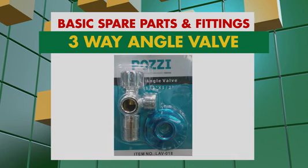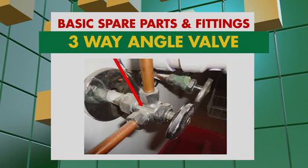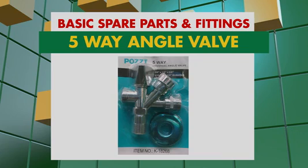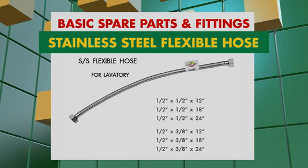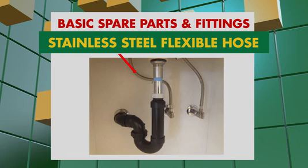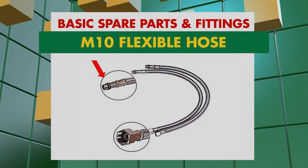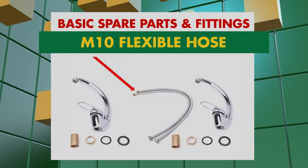Ang 3-way angle valve ay ideal na ginagamit sa mga mixing faucets na walang abang for hot water line. Ang 5-way angle valve naman ay ideal gamitin sa toilet at hand spray bidet ng banyo, dahil ito ay may dalawang control valve para sa pag-on and off ng water supply. Ang stainless steel flexible hose ay ginagamit for water supply papunta sa faucets ng laboratory or kitchen faucets. At ang M10 flexible hose ay spare parts para sa mixing faucet or hot and cold na faucets.